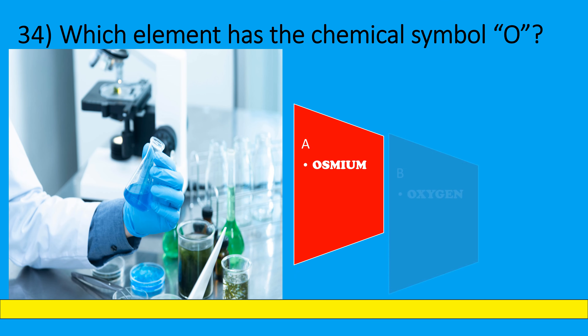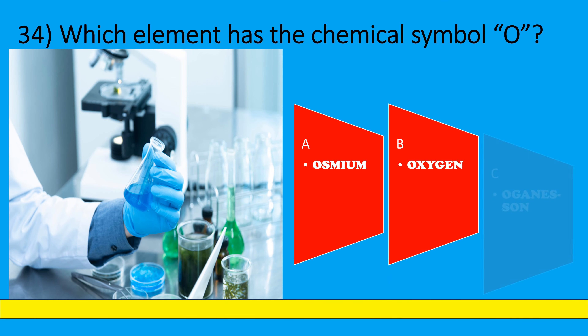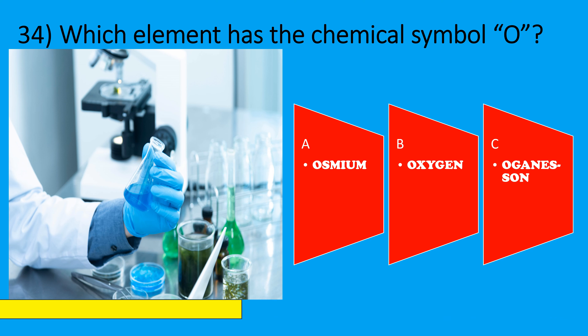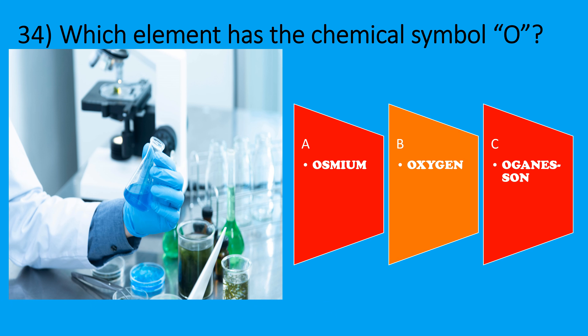Which element has the chemical symbol O? A: Osmium, B: Oxygen, C: Oganesson. The correct option is B, Oxygen.